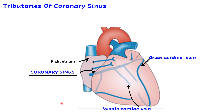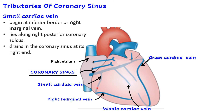The third major tributary is the small cardiac vein. It actually begins as the right marginal vein, which runs just above the inferior border of the heart, curves around the right border, and continues as the small cardiac vein. The small cardiac vein runs in the right posterior part of the coronary sulcus and joins the right end of the coronary sinus. Sometimes the right marginal vein directly opens into the right atrium.